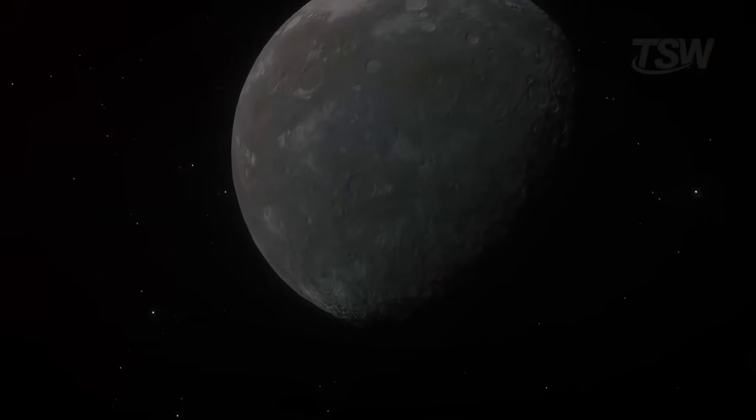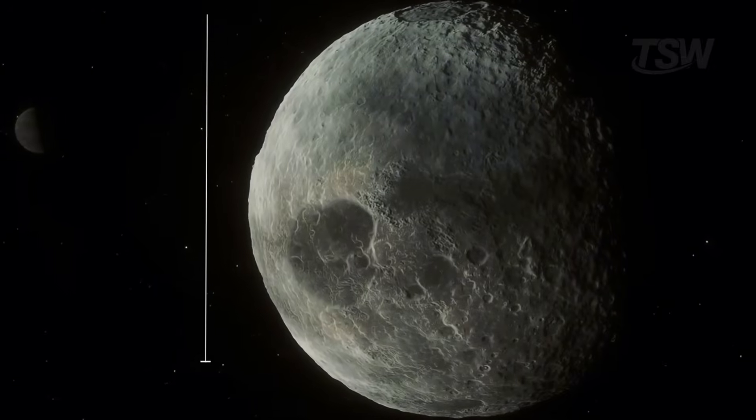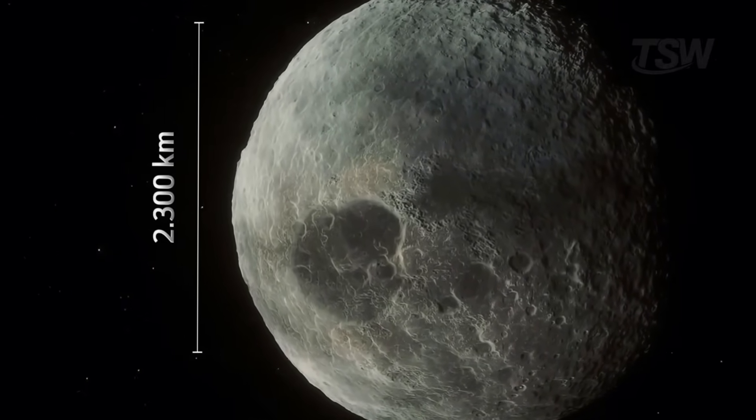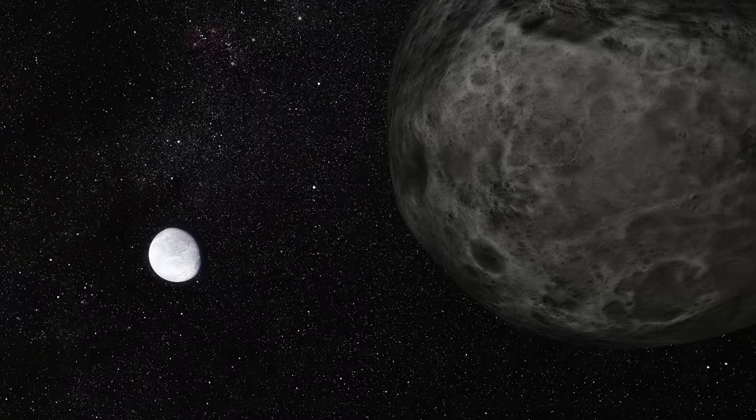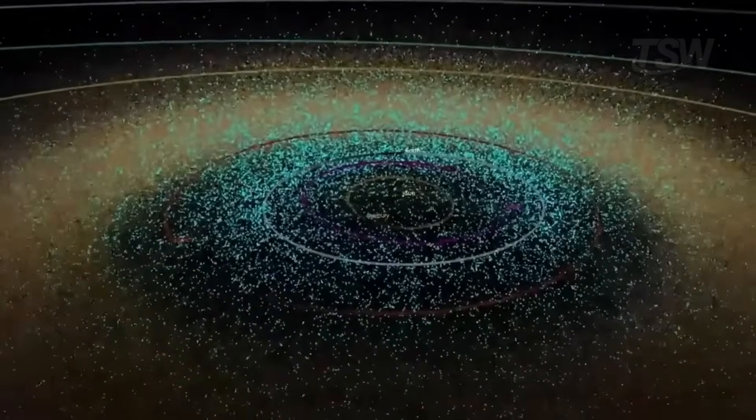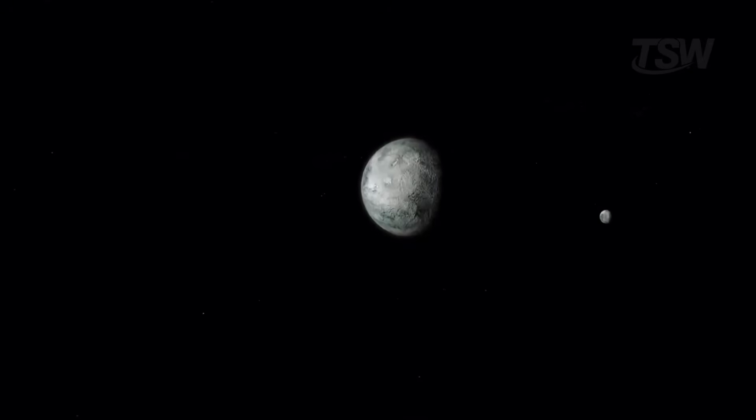In the end, the discovery of Eris ended up being the catalyst for Pluto's reclassification. Eris measures about 2,300 kilometers in diameter, has a highly inclined orbit, and a moon named Dysnomia. Its distance from the Sun is three times greater than Pluto's, and it takes a staggering 557 years to complete a full orbit.